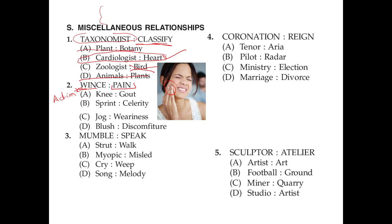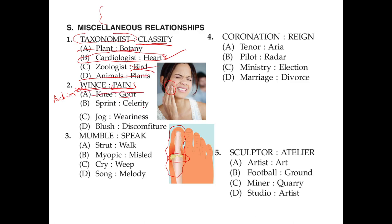Wince is an action, so let's find an action in the options. Knee is not an action. Sprint could be an action. Jog is an action. Blush is also an action. Gout is inflammatory pain that occurs in the toe due to high uric acid — not in the knee, so that's not right. Strength and celerity: celerity means moving fast — sprinting is already running fast, so no clear relation. Jog and weariness have no action-cause relation. Blush and discomfort: when someone blushes, they feel shy or discomfort — similar to wince and pain. So D is the right answer.